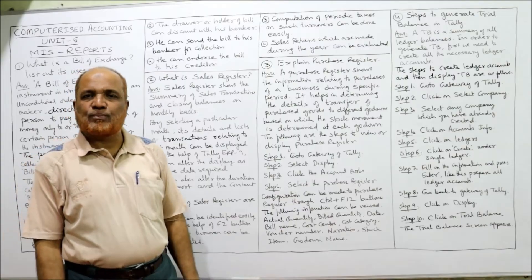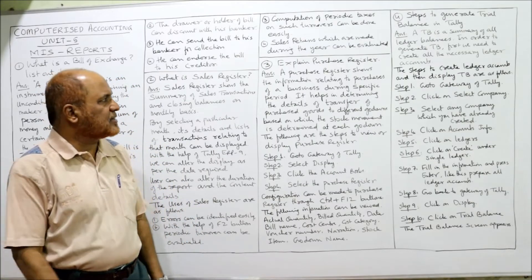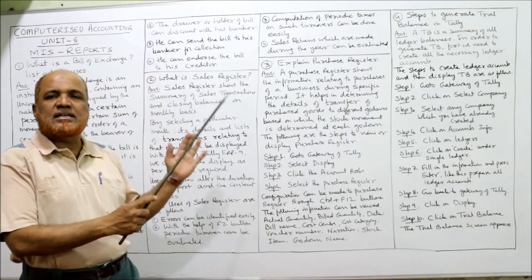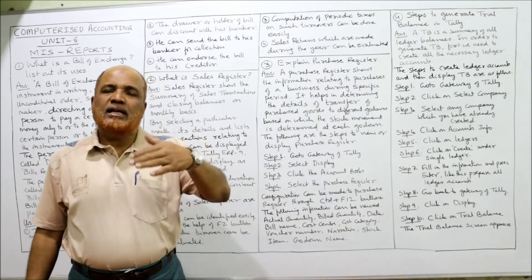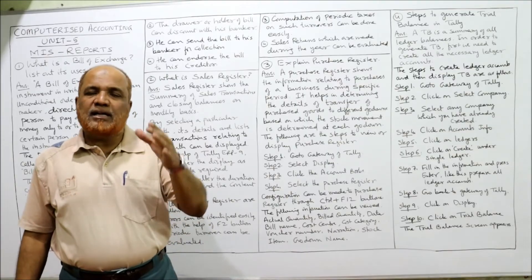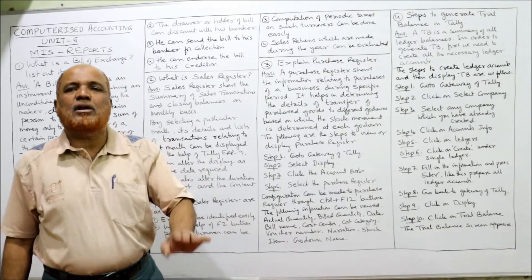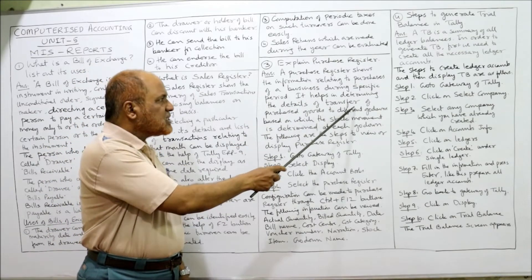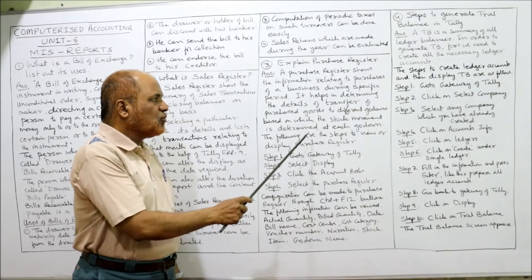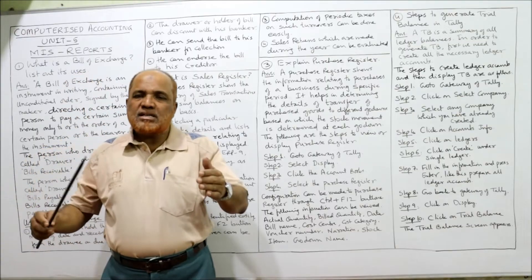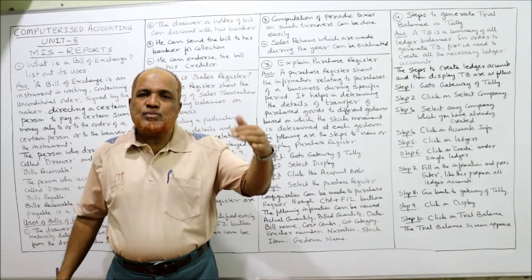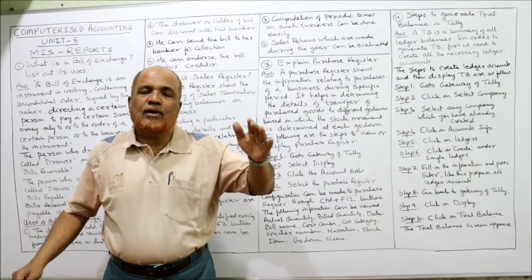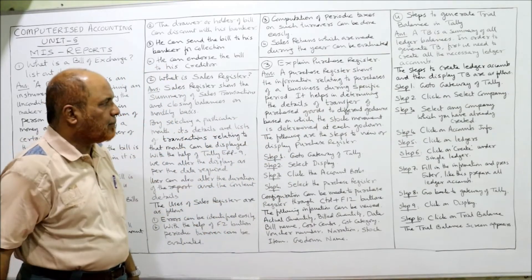The third question: what is purchase register? Purchase register shows the information relating to purchases of the business. Just like the sales register shows sales details for a particular period, the purchase register shows purchase details for a particular period. It also helps in determining the transfer of purchased goods to different go-downs, based on which stock movement at each go-down is determined.